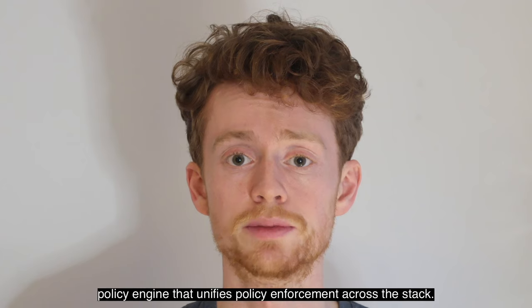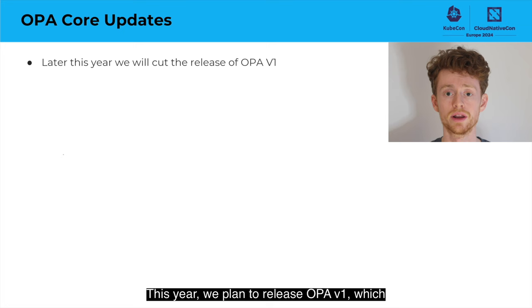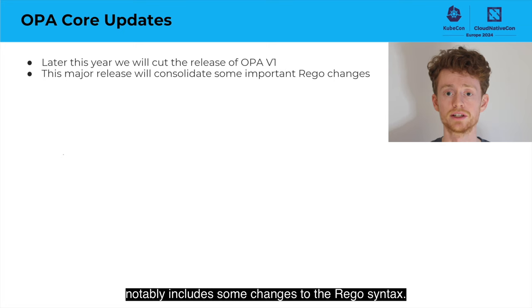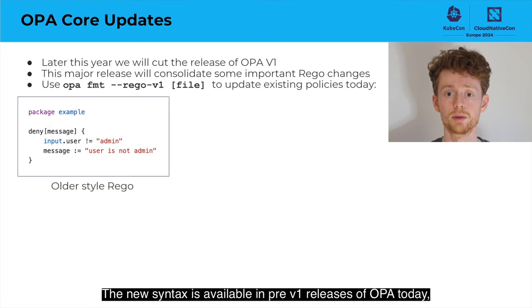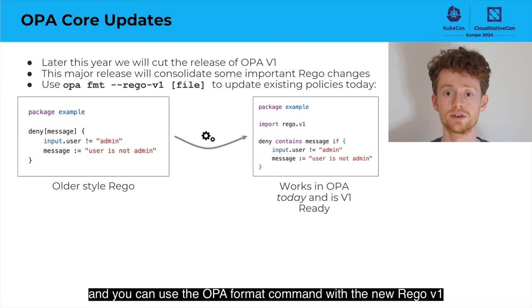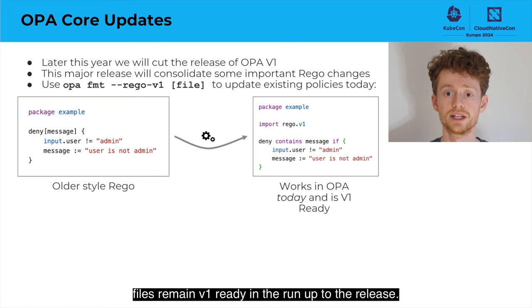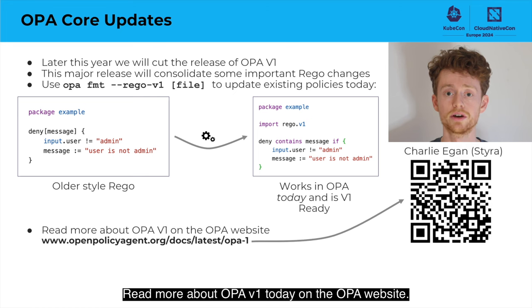Open Policy Agent is the general purpose policy engine that unifies policy enforcement across the stack. This year, we plan to release OPA v1, which notably includes some changes to the Rego syntax. The new syntax is available in pre-v1 releases of OPA today, and you can use the OPA format command with the new Rego v1 flag to update your existing policy files to be v1 ready. Also use the OPA check command with the same flag in your build pipelines to make sure the policy files remain v1 ready in the run-up to the release. Read more about OPA v1 today on the OPA website.